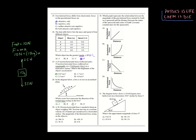Number twenty-nine: a 50-newton horizontal force keeps an object weighing 500 newtons moving at constant velocity. The magnitude of the frictional force is what? Constant velocity means balanced forces. We push with 50 newtons, so friction is also 50 newtons to keep it constant and balanced — choice C.